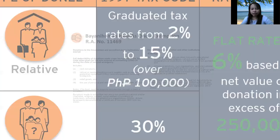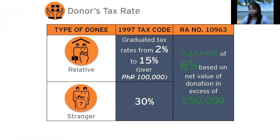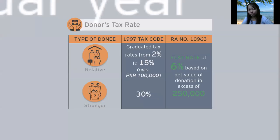The donor's tax rate is now at six percent. Under the old Tax Code, it was graduated for relatives and fixed at 30 percent for strangers. Under the TRAIN Law, whether the donee is a stranger or a relative, the donor's tax rate is six percent, based on the value of the donation in excess of 250,000 pesos. This 250,000-peso threshold is cumulative for all donations made within the year.